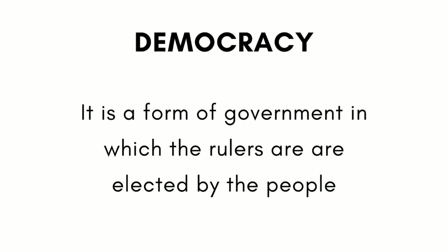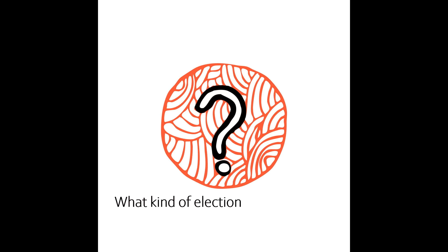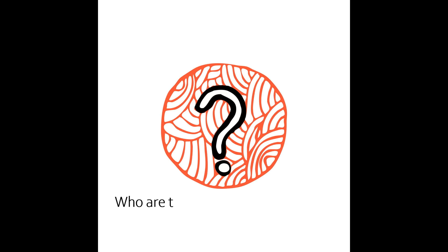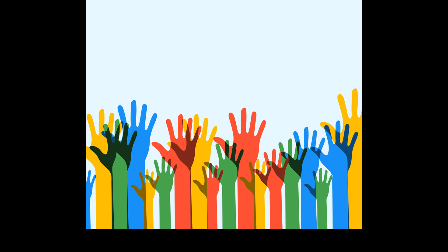This definition of democracy gives rise to various questions. Who are the rulers in this definition? What kind of election could be called a democratic election? Who are the people who can elect the rulers or get elected as rulers? What form of government is a democracy?